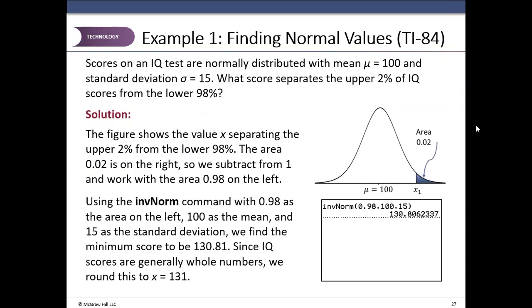Scores on the IQ test are normally distributed with mean of 100, standard deviation 15. What score separates the upper 2 percent? That means the top 2 percent area in the curve is 2 percent or 0.02. Then the area to the left of that unknown x is 1 minus 0.02, which is 0.98. So always area to the left of the unknown x. So second vars 3, area is 0.98, mean is 100 and standard deviation is 15. Paste, enter and enter. And the x score is 130.8. What does it mean? Anybody getting a score less than 130.8 is in the 98th percentile. Anybody with a score above 130.8 or 131 is in the top 2 percent.